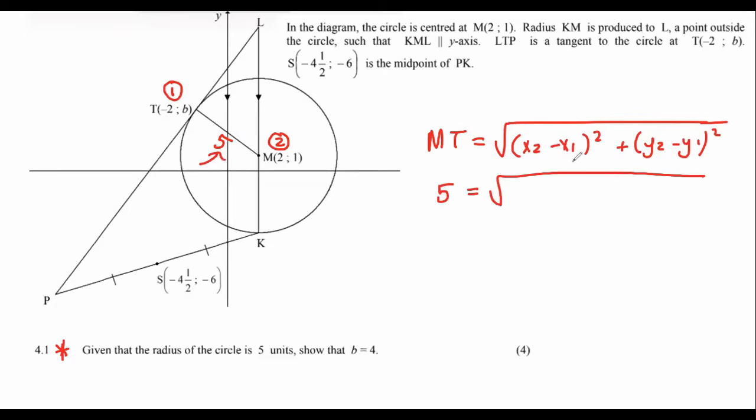I can just go plug everything in. That would be 2 minus negative 2, and then 1 minus b. Then I'm just going to simplify the inside. So that's going to become 16 eventually, plus 1 minus b squared.